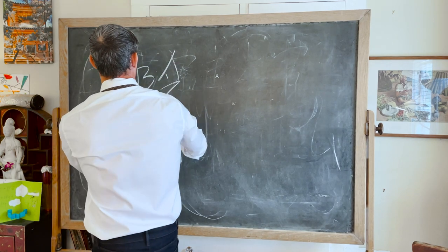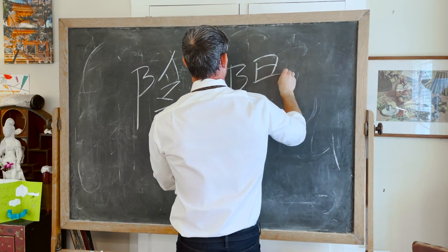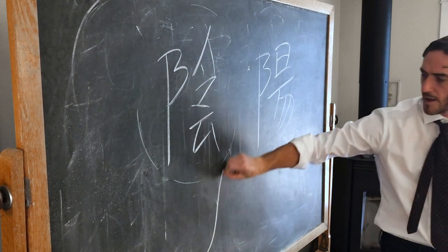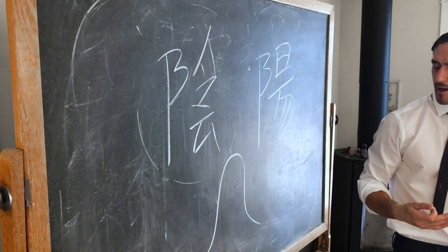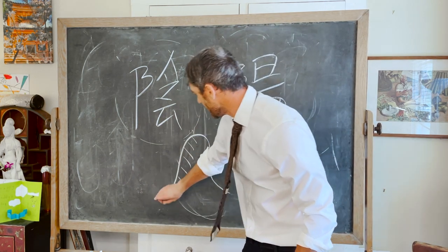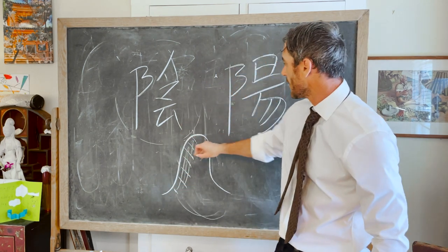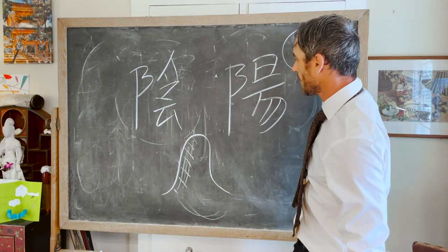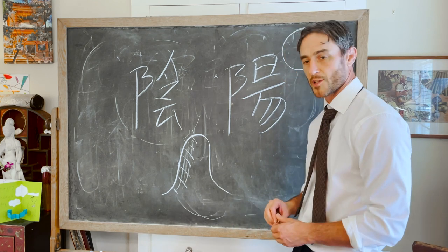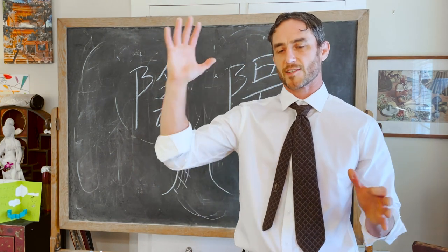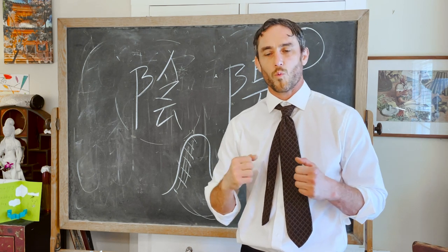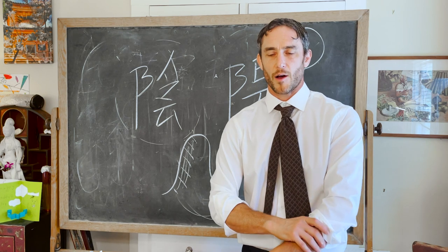With yin, in the Shuowen Jiezi — an early introduction to what words mean — yin refers to the shady side of a hill. If this were a hill, the shady side is yin and the sunny side is yang. If the sun is shining from the south on a hill, the yin side is the side that doesn't receive direct sunlight, and the yang side is the side that does.